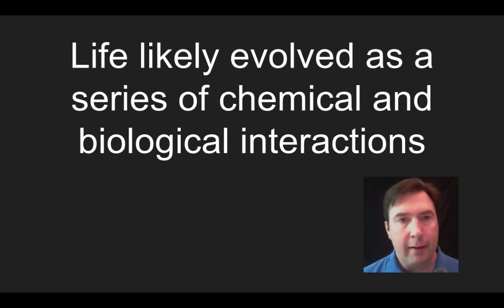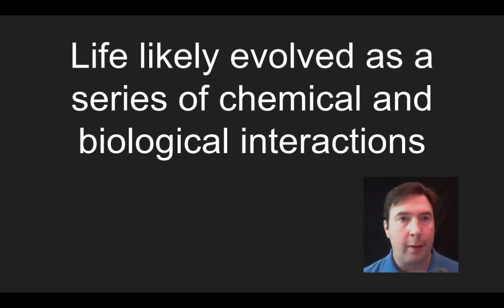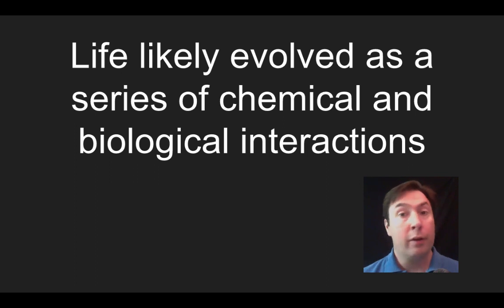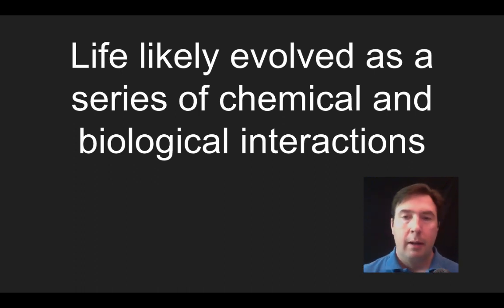Hey everybody, this is Mr. Matthew again, and I am here for Unit 3, Theme Number 1. In this theme, we're going to talk about how life likely evolved as a series of chemical and biological interactions. In this video, we'll cover the Miller-Urey experiment, how it leads to a hypothesis for how the first cells came about, endosymbiotic theory, and how cell theory is a good example of theory development through a broad array of observations. All right, let's get to it.